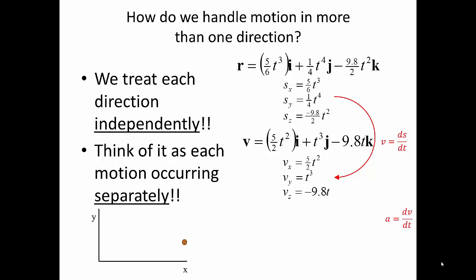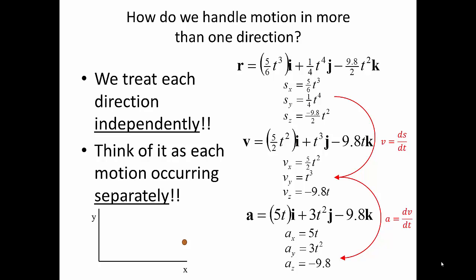The acceleration is the derivative of the velocity with respect to time. Taking the derivative of each velocity component gives the acceleration in each direction. The acceleration in the x direction is 5t, the acceleration in the y direction is 3t², and the acceleration in the z direction is -9.8. We can then write our acceleration vector.